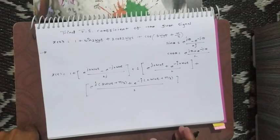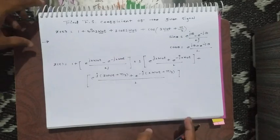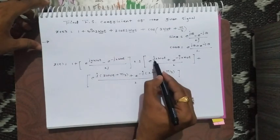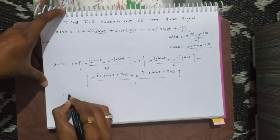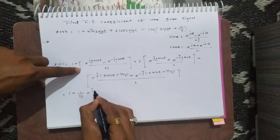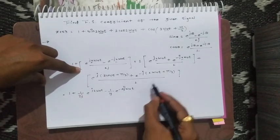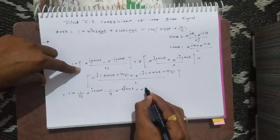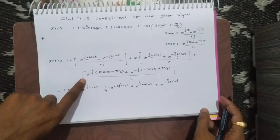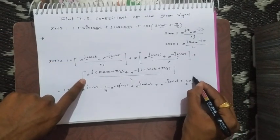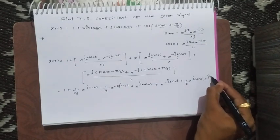Now distributing this entire term so that we can collect common terms: the common terms we see are e raised to j2, e raised to j2, e raised to minus j2, e raised to minus j2. Based on that we can simplify this as: 1 plus (1 upon 2j) e raised to j 2 omega naught t minus (1 by 2j) e raised to minus j 2 omega naught t. The 2s cancel, leaving e raised to j 2 omega naught t plus e raised to minus j 2 omega naught t. Similarly, for the next term: (1 upon 2) e raised to j 3 omega naught t into e raised to j pi by 3.